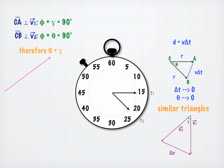Let's say that the magnitude of our velocities V1 and V2 is equal to V. With our similar triangles then, that means the ratio delta V over V is equal to the ratio V delta t over R.